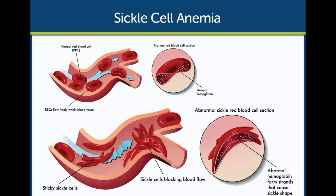Organ damage: sickle cells can cause damage to a range of organs, including the spleen, kidneys, liver, and eyes. People with HBSS also have an increased risk of infections, particularly those caused by bacteria that can cause pneumonia or meningitis. There is currently no cure for HBSS, but treatment options can help manage the symptoms and complications, including pain management, blood transfusions, medications to reduce the risk of infections, and potentially bone marrow transplants.